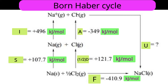Sodium remains in solid form at room temperature, so we consider solid sodium and gaseous chlorine giving solid NaCl — this is the direct reaction. The enthalpy change for formation of sodium chloride is −410.9 kJ/mol, meaning formation of the crystal is exothermic. This is the enthalpy of formation, represented by the symbol F.